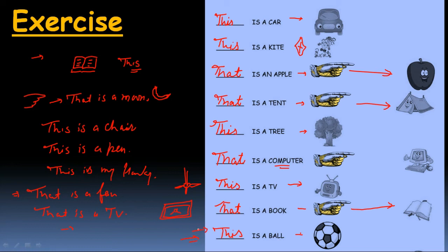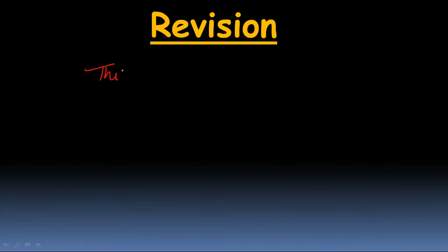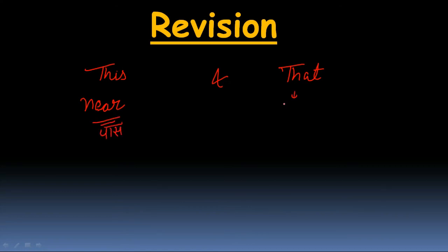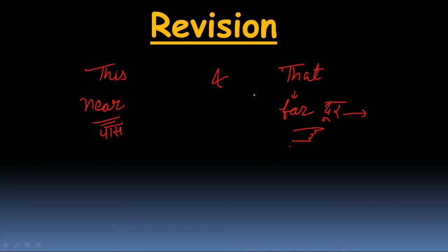चलिए revise करते हैं। आज हमने क्या सीखा — 'this' और 'that'। 'This' किसके लिए use करते हैं बिटा — anything, place, person, animal जो कि हमसे पास हो। और जो चीज़ हमसे दूर है, उसको बताने के लिए हम finger का भी use कर रहे हैं — तो वहाँ क्या use करते हैं? 'That'। पास वाली चीज़ों को बताने के लिए? 'This'। ठीक है बिटा।